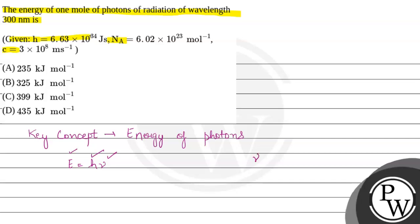The frequency nu is equivalent to C divided by lambda, where C is the speed of light and lambda represents the wavelength. Hence the formula for energy becomes E = HC divided by lambda.